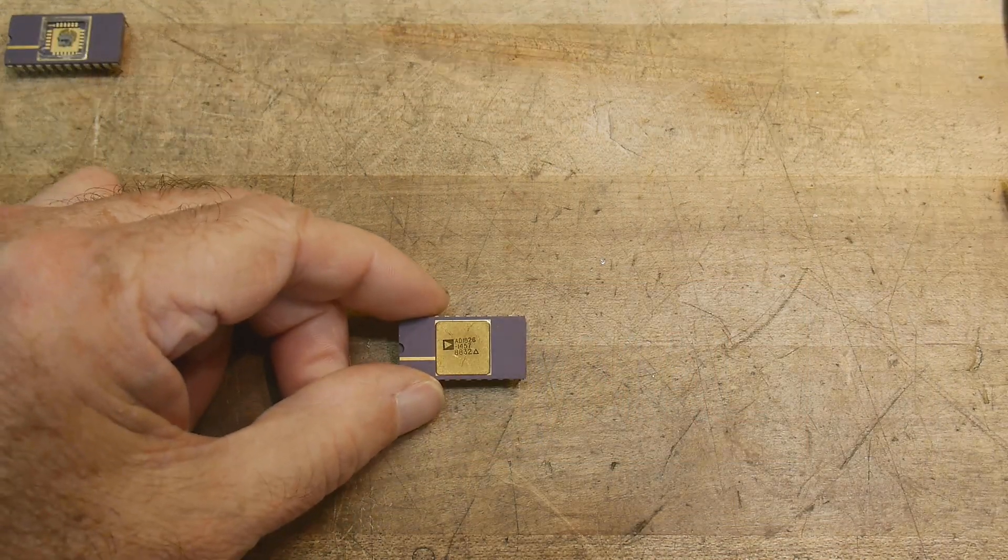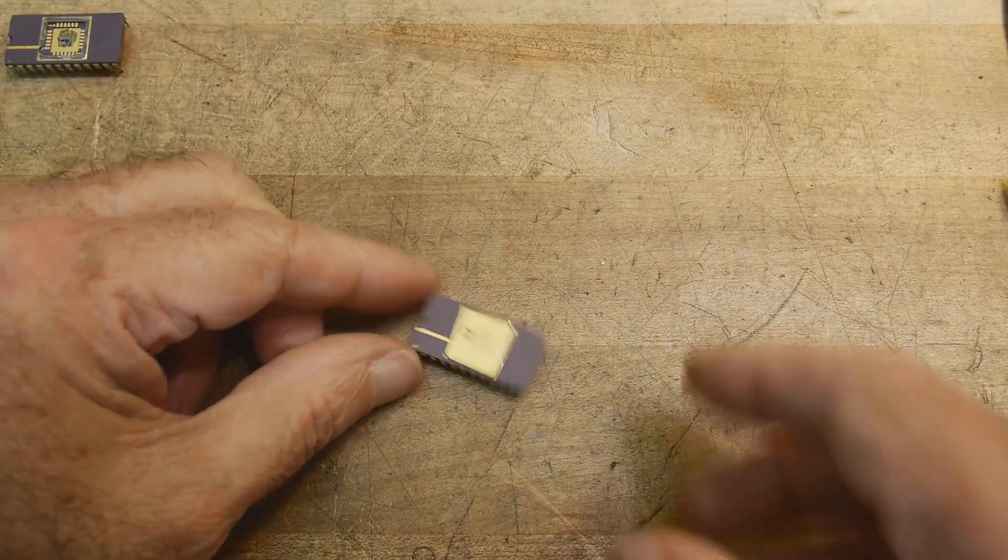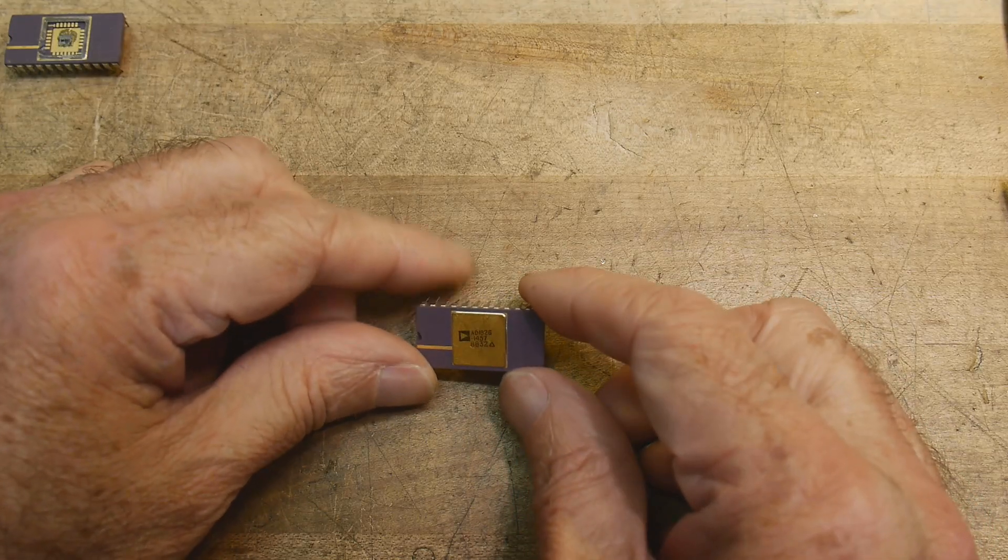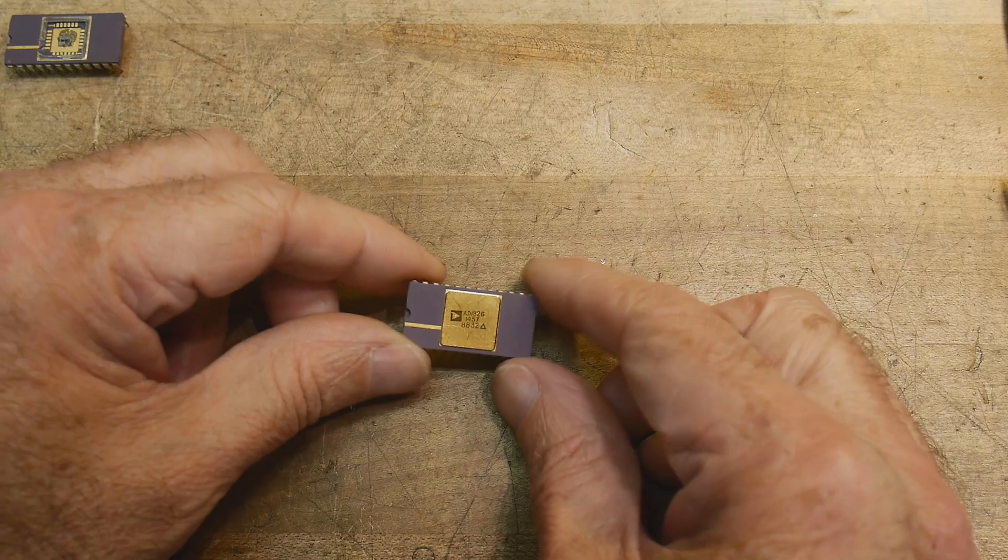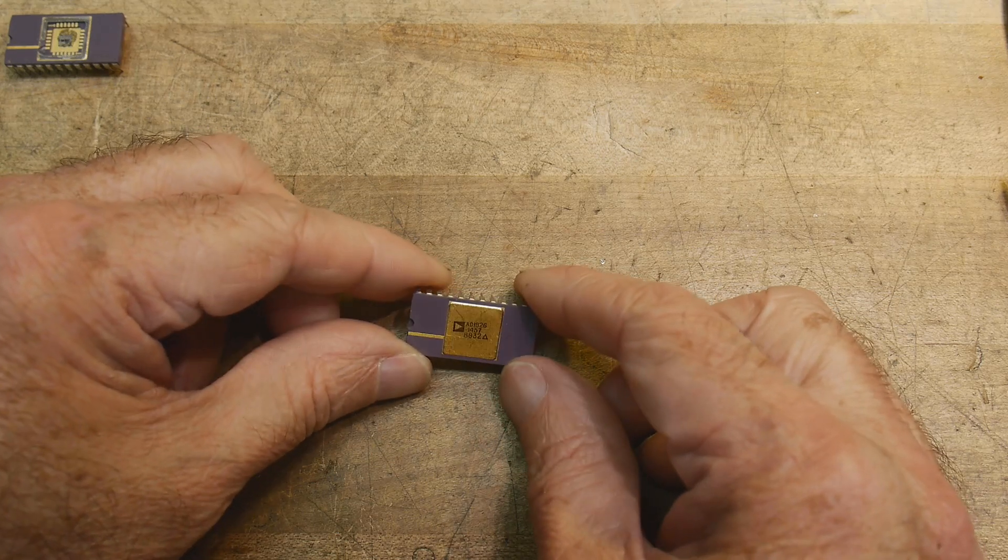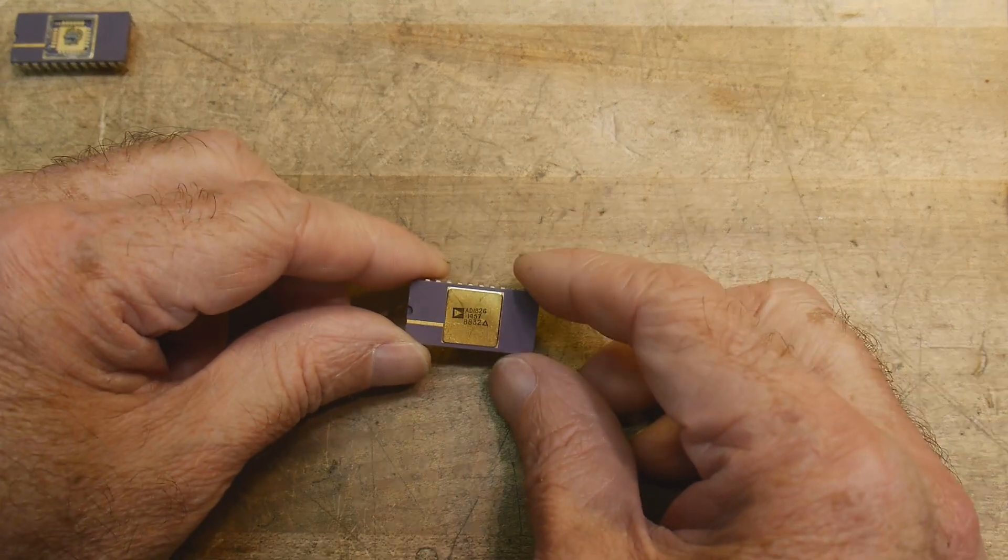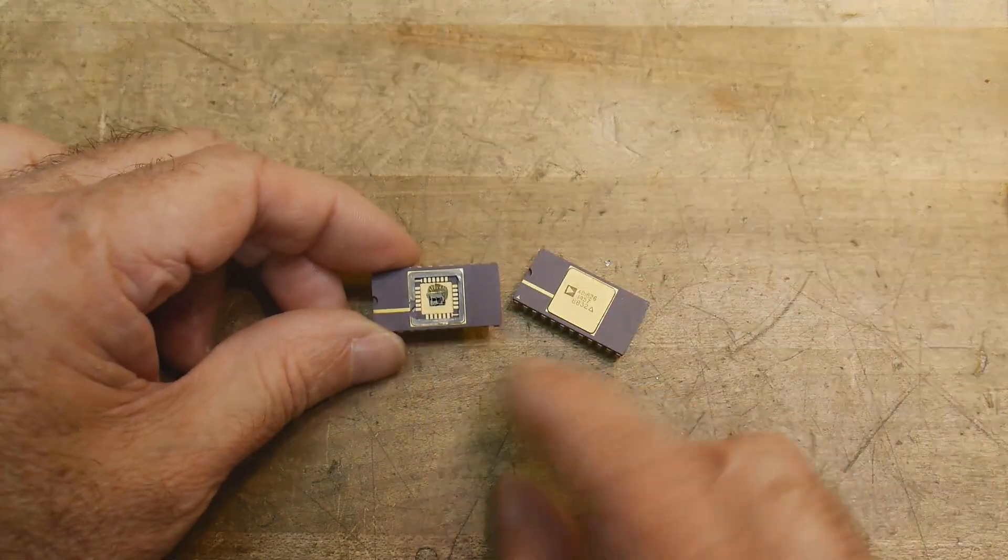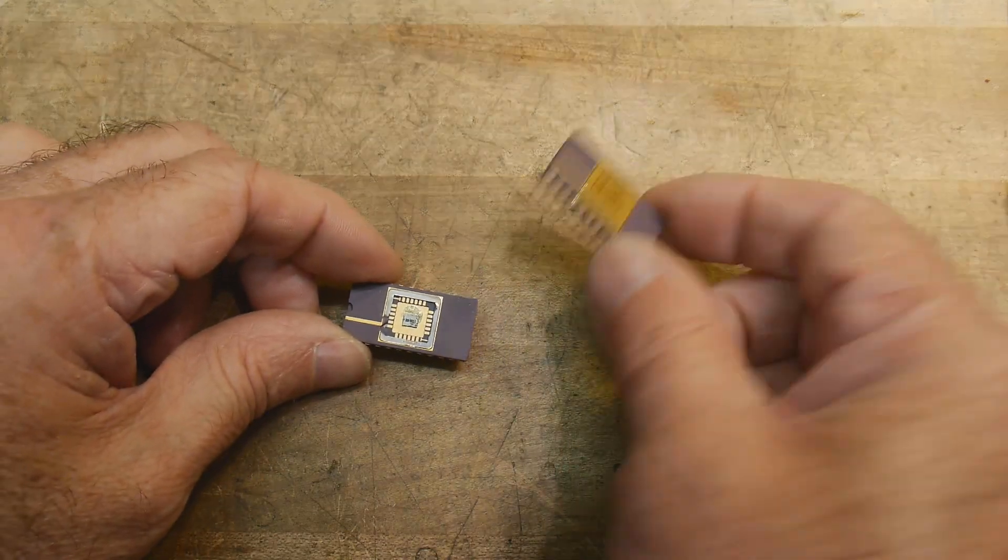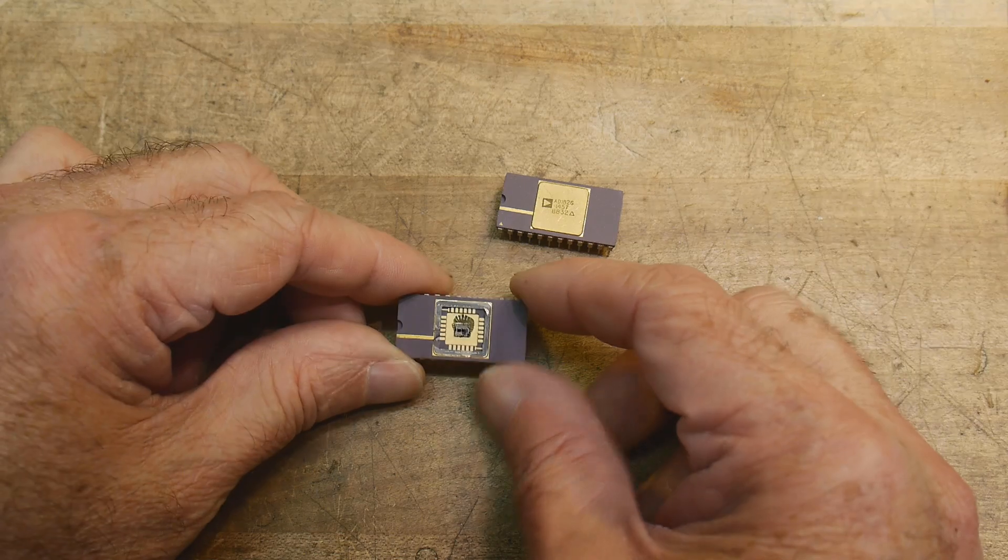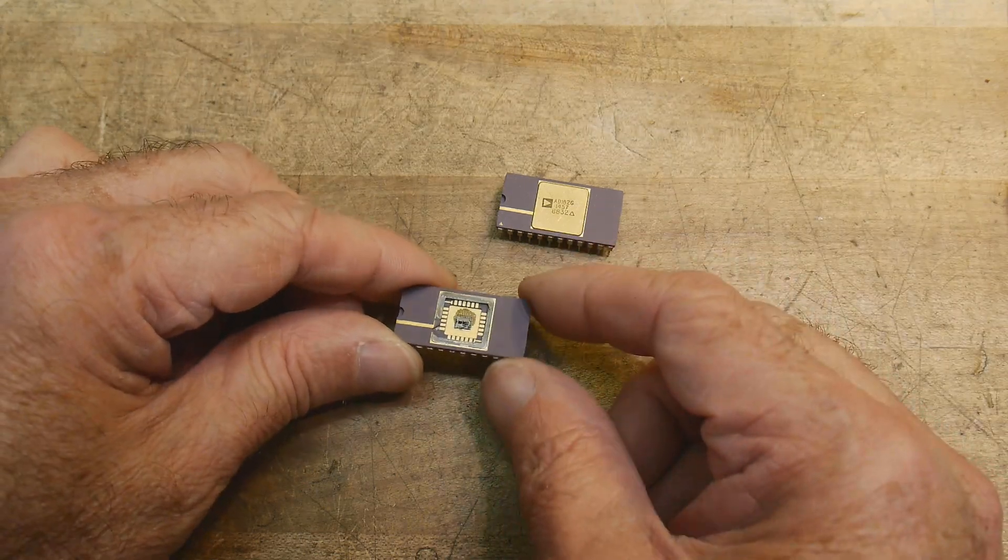People seem to enjoy my microscope videos, so I pulled this out of a piece of test equipment. It's a 12-bit D to A converter, an Analog Devices part. There were a couple of them in there, but I don't need these since there are better ones these days. I popped the lid off, so let's put it under the microscope. Nice ceramic package.